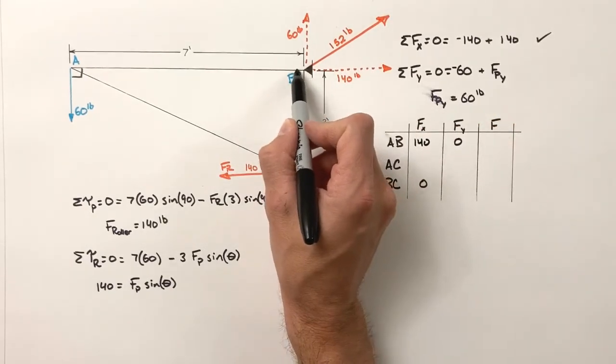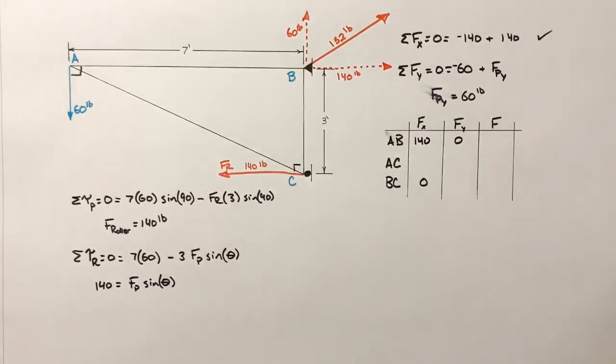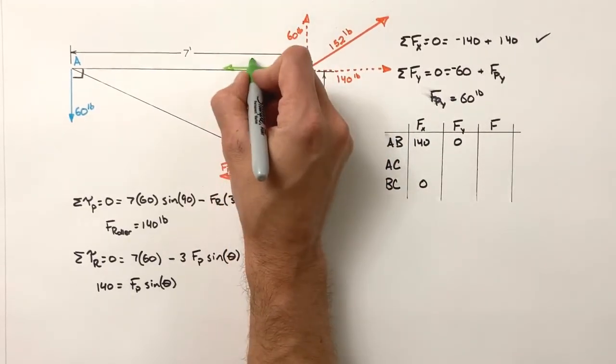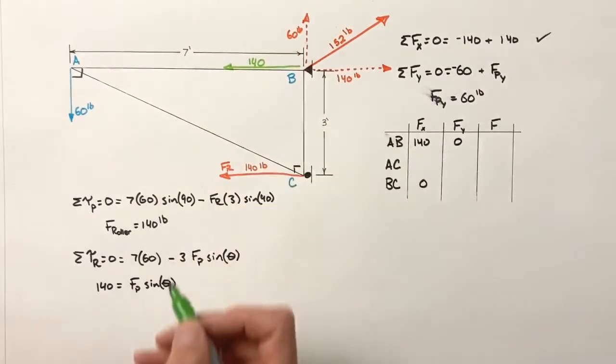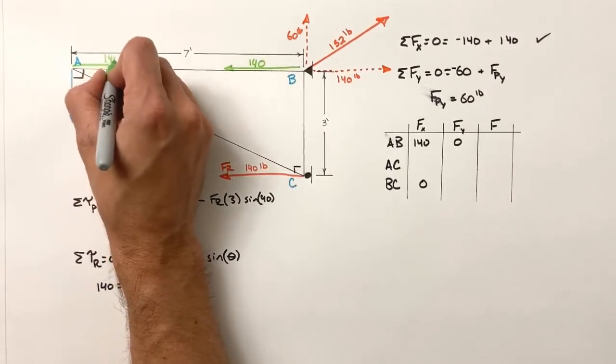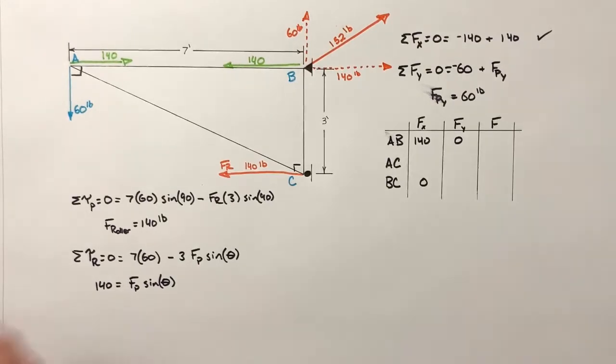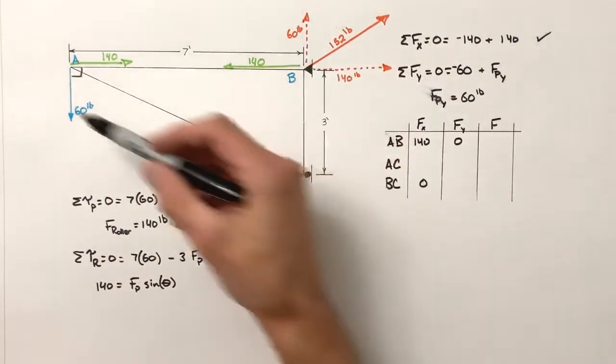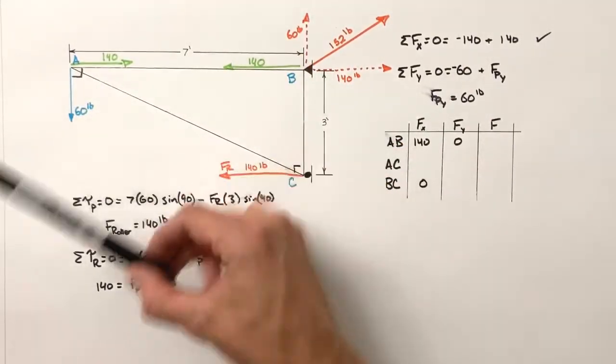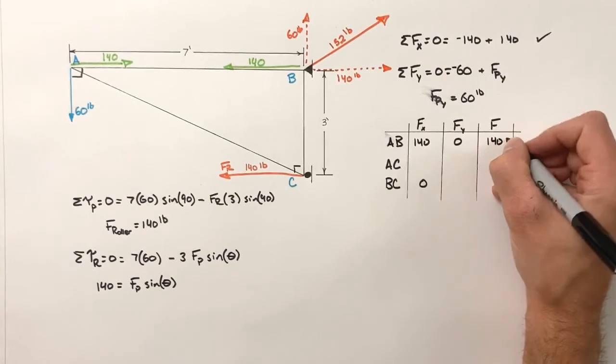AB has to be carrying all of that load. And so that means AB in the x direction is 140. If AB is pulling with a force of 140 to the left, that'll keep this joint B from moving. Now at the other end, AB is pulling with a force of 140. AB is under tension because it's pulling. We could, in fact, replace this with a cable. Oftentimes you'd see a situation like this, a beam connected by a cable to a wall, and maybe we're hanging a 60 pound sign out here, something like that. So the force in AB is 140 pounds.